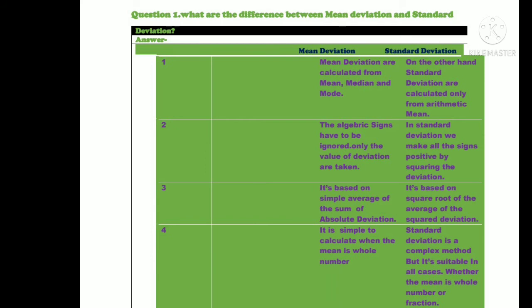In this video, I will describe the differences between mean deviation and standard deviation. First, mean deviation is calculated from mean, median, or mode, while standard deviation is calculated only from the arithmetic mean.